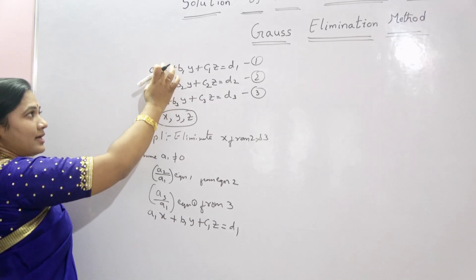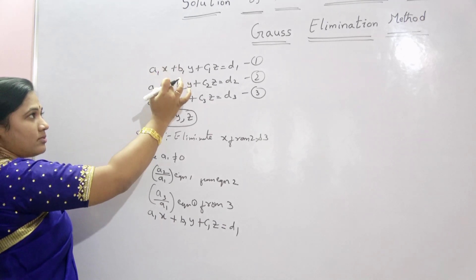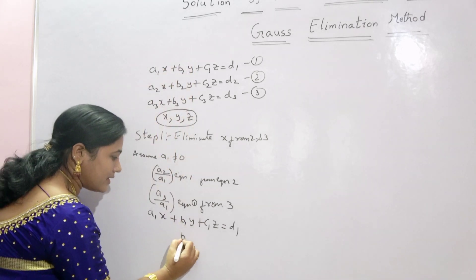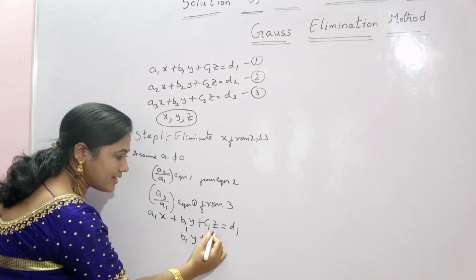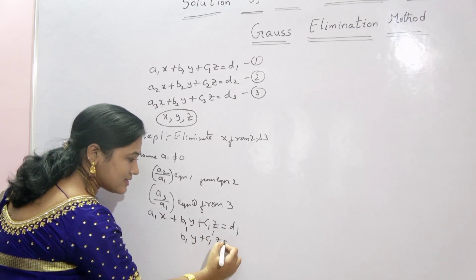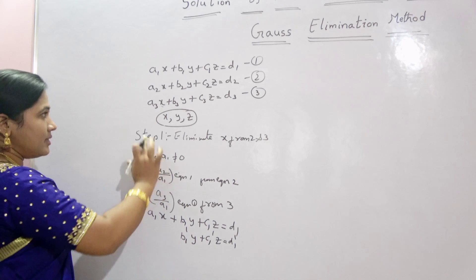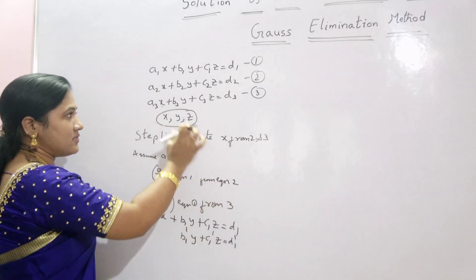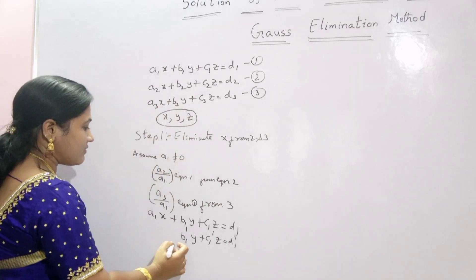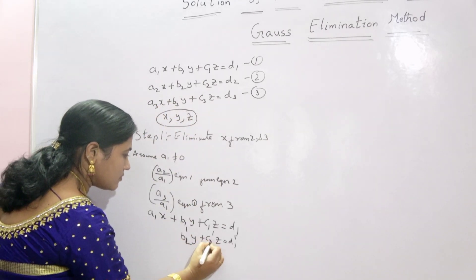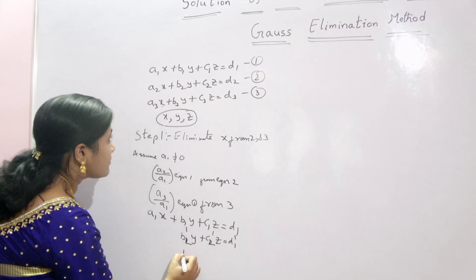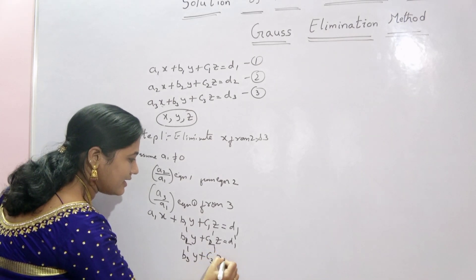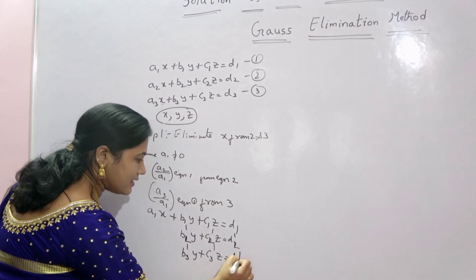If you subtract these two, the x term becomes 0, and the resulting equation can be written as b1'y + c1'z = d1'. Similarly, by operating a3/a1 times equation 1 minus equation 3, the resulting equation is b3'y + c3'z = d3'.